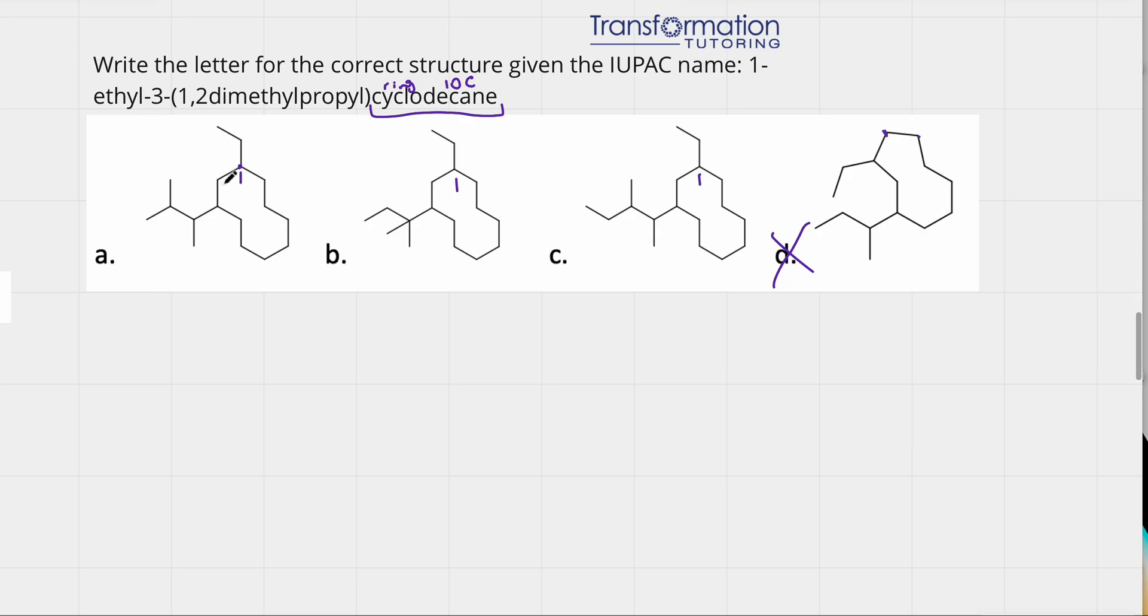And then if I go this way, on the third carbon, I have another group. So all of them on the third carbon have another group. All of them have an ethyl on carbon 1. And on third carbon, they have another group.